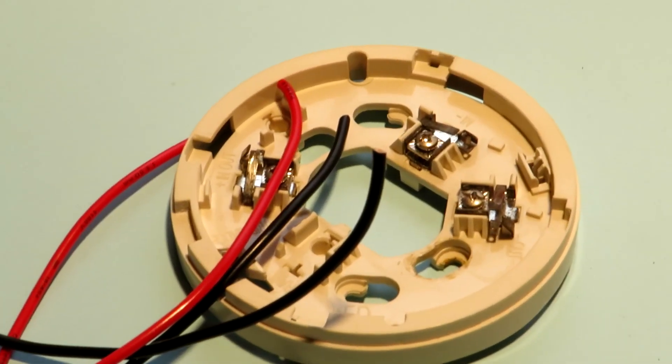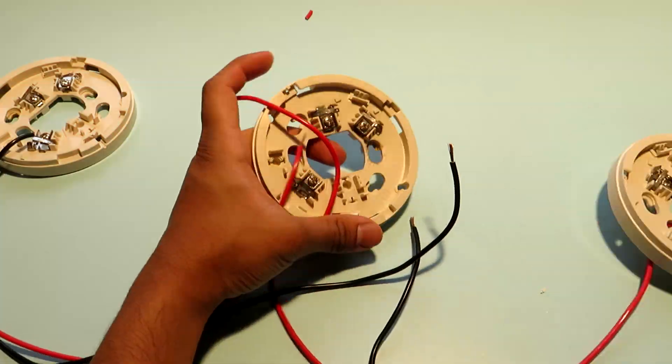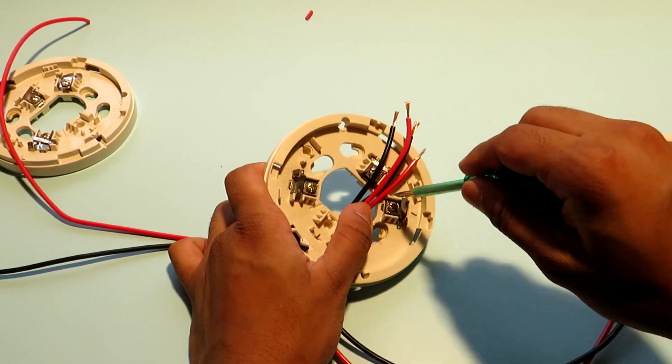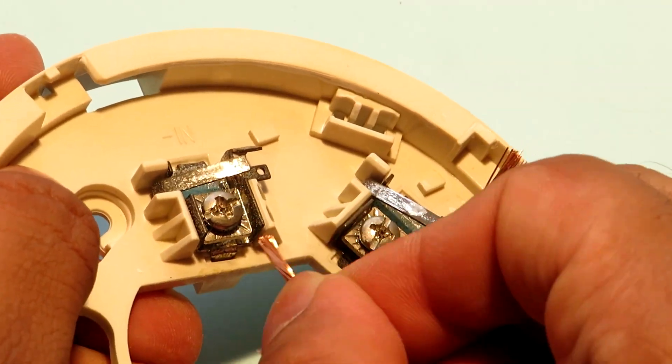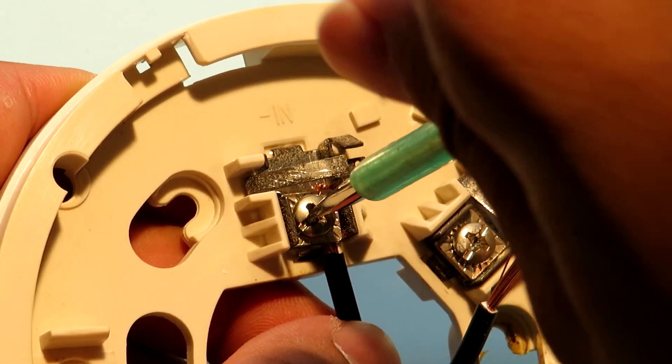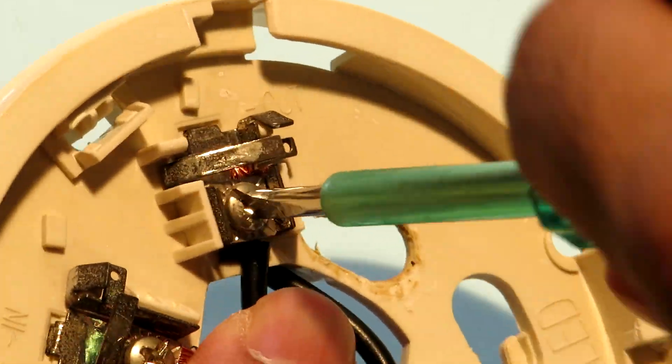Now let's connect the second detector. It's pretty much the same. Both the positive wires go to the same terminal which is labeled positive in out and the incoming negative wire from the first detector will go to the negative in terminal and the outgoing negative wire to the third detector will go to the negative out terminal. And it doesn't really matter even if you interchange these negative in and negative out terminals.